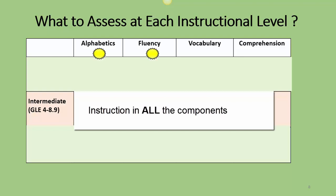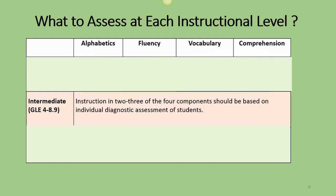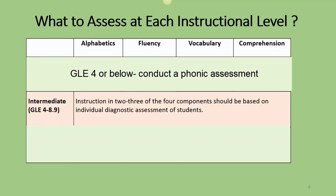That means alphabetics, fluency, vocabulary, and comprehension. But don't forget that when you're doing your teaching, you should really only focus on 2 or 3 of the 4 components of reading at one time. If your student scores below a GLE 4, you will need to conduct some kind of a phonics assessment, which is explained in great detail during the STAR Institutes.